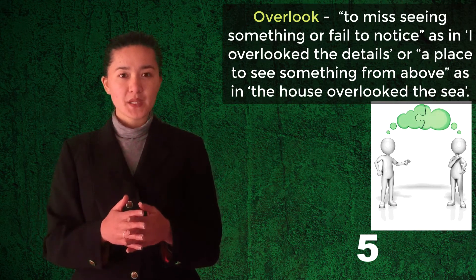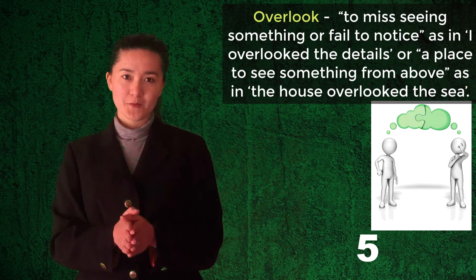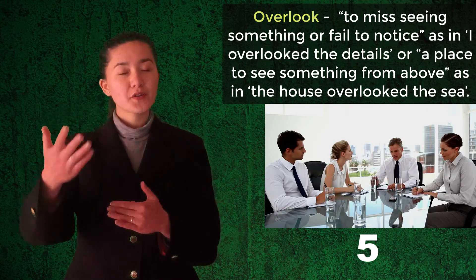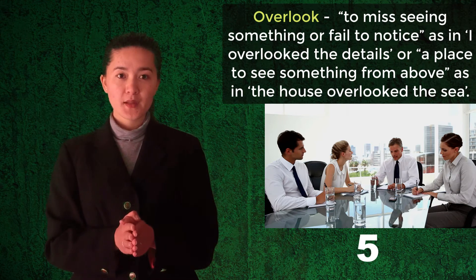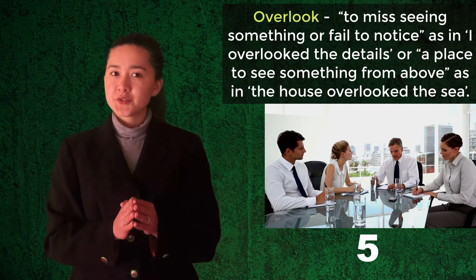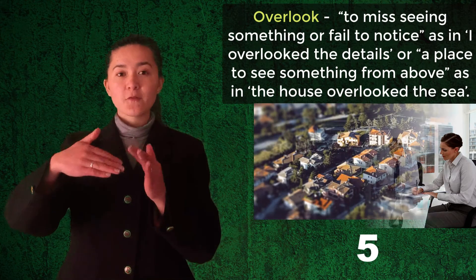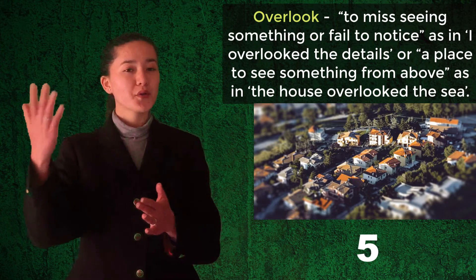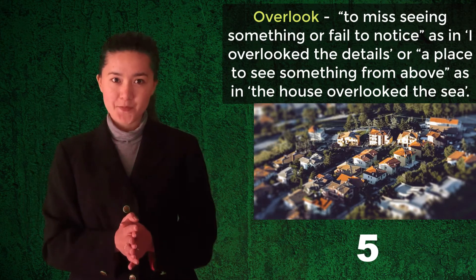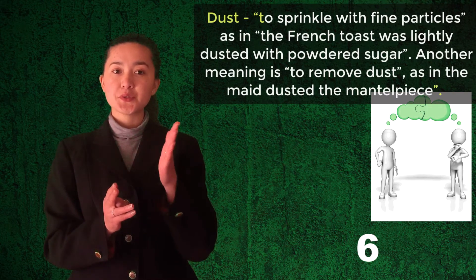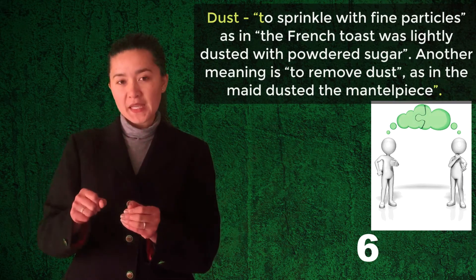The fifth word is 'overlook.' That means to fail to notice something or miss something, as in 'I overlooked the details.' The contrary meaning can be to see something from above, as in 'The house overlooked the scene.'